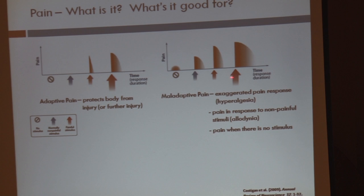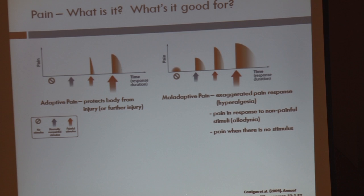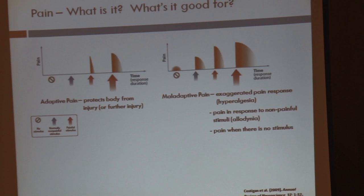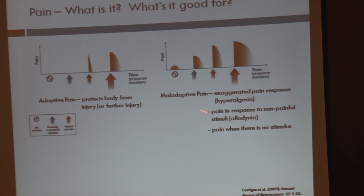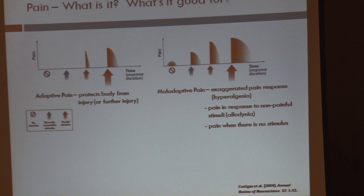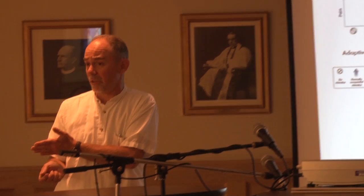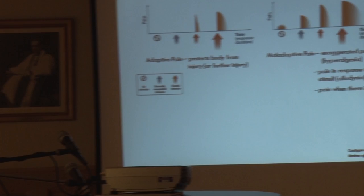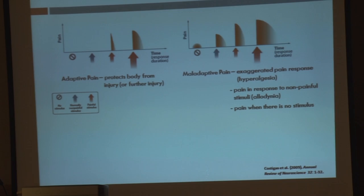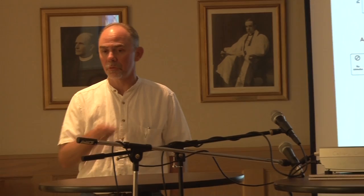One type of maladaptive pain would be an increased response to a painful stimuli — it's still a legitimately painful stimulus, but our perception of it has been exaggerated. This is a kind of sensitization. Another type would be pain elicited by non-painful stimuli; for example, a light touch or putting a shirt on can elicit a painful response. This is a kind of sensitization called allodynia. Finally, there is pain that is unprovoked or spontaneous, which may result from spontaneous activity of pain-sensing neurons within the pain pathway in the central nervous system.